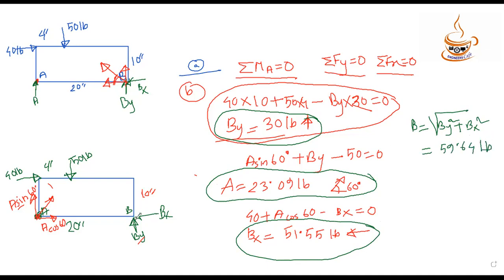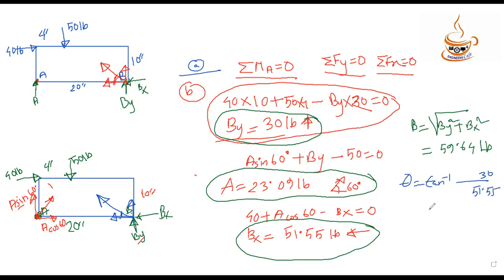The resultant is broken into components. The angle theta of the resultant reaction is found using theta equals tan-inverse of By divided by Bx. Substituting By = 23.09 and Bx = 51.55, theta comes out to be 30.2 degrees.